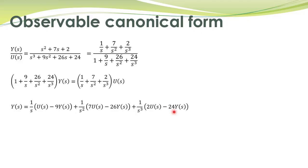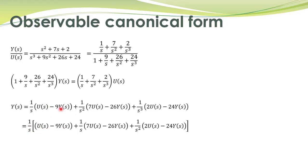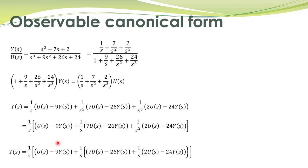We further rearrange this equation by taking 1/s common from all these terms. After taking 1/s common, you are left with 1/s, and then the remaining terms including 1/s². Taking 1/s common again from this inner term, we obtain the nested structure with 1/s appearing at each level of the expression.